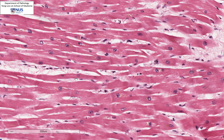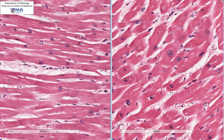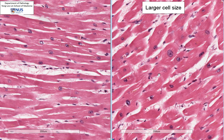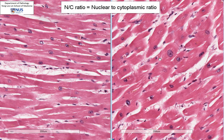I want you to make a comparison with a second slide. On the right, we see a different slide, and both are taken at exactly the same magnification. If you look at this slide, a very obvious difference is that the cells are much larger here. Not only is the whole cell bigger, the nucleus is also bigger, but the nuclear-to-cytoplasmic ratio is still relatively well preserved.